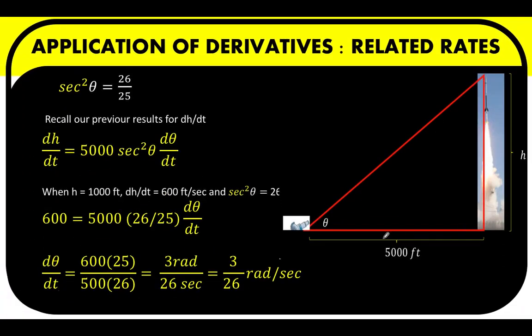So going back to our problem scenario, this camera should be moving at the rate of 3 over 26 radian per second so that it stays focused on the rocket as the rocket moves up, so that this camera can keep track of this rocket as it moves upward. And to extend this application, this is also how our engineers and mathematicians are performing calculations in order to keep track of missiles, in order to keep track of any flying object.